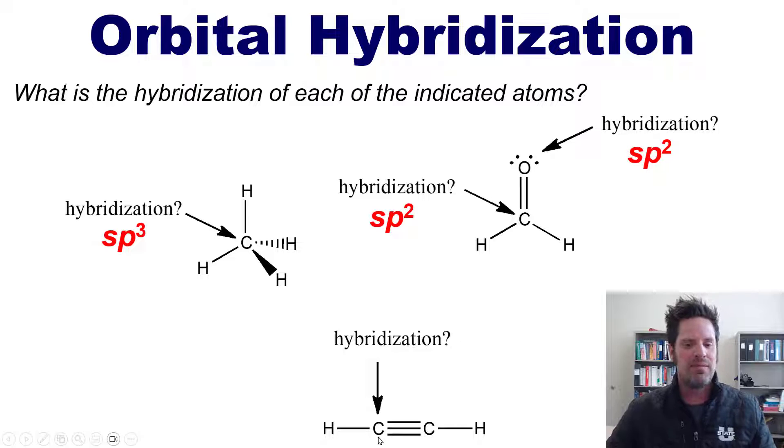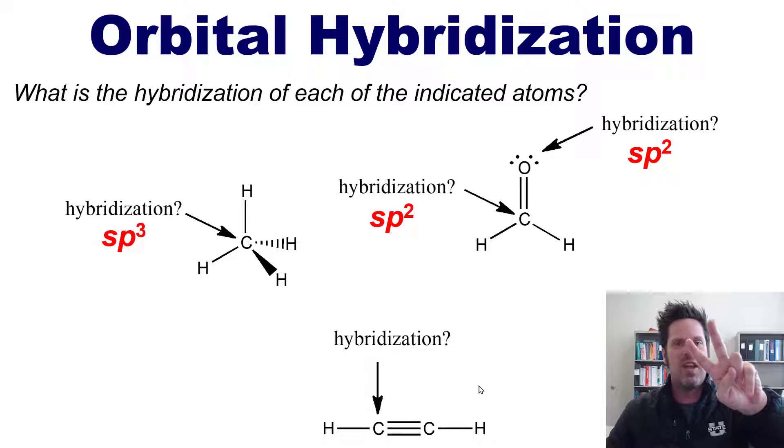Which takes us down here, how many things are around that carbon? Again, the kinds of bonds around it are irrelevant. I just count how many things it's bonded to. This carbon is bonded to a hydrogen to its left and a carbon to its right. That's two things. So one of these fingers, and I have to be careful which one I put down, is an s, and the other is a p. Hence the hybridization here is sp.